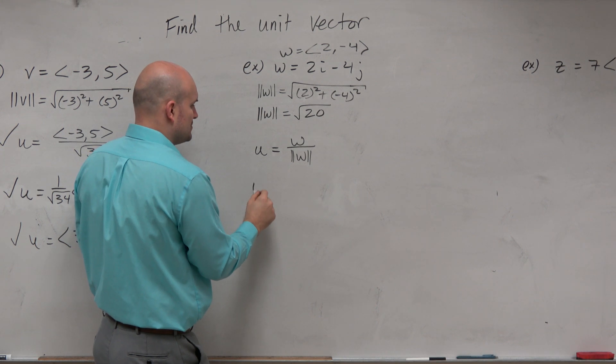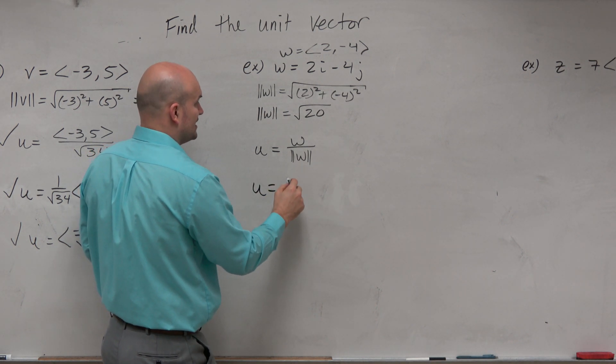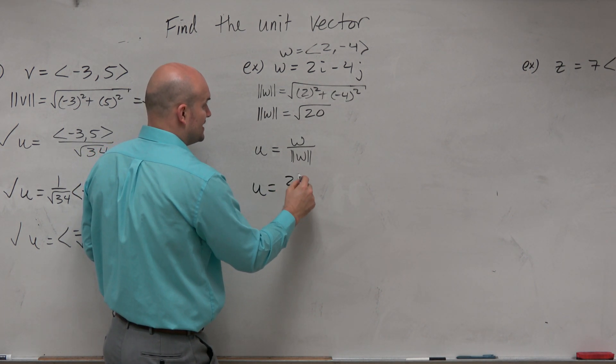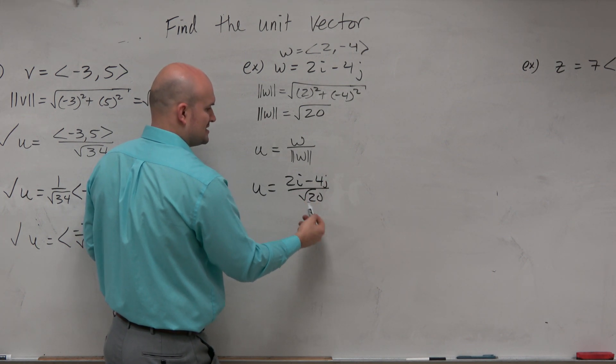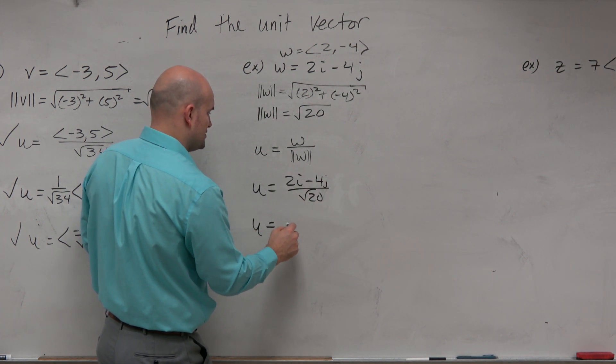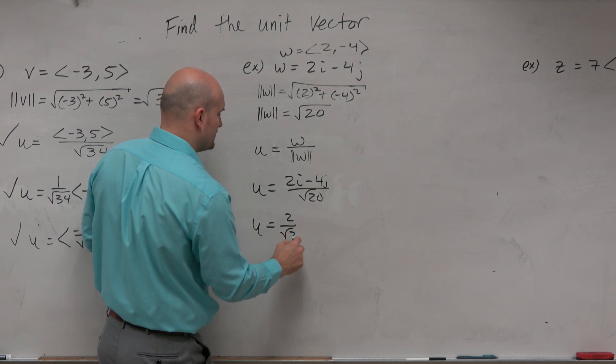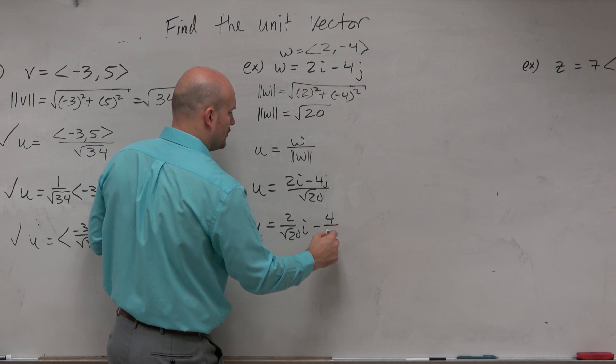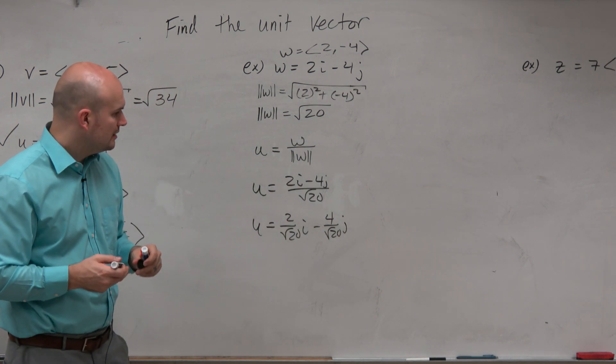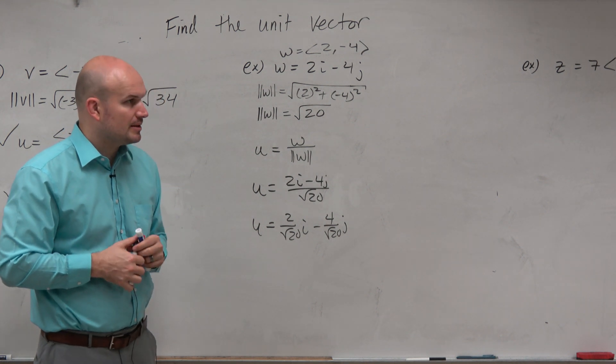So there's a couple different ways. You can typically write 2i minus 4j divided by square root of 20. It's best to distribute that. So therefore, 2 over the square root of 20i minus 4 over the square root of 20j. That'd be the preferred way to write that problem.